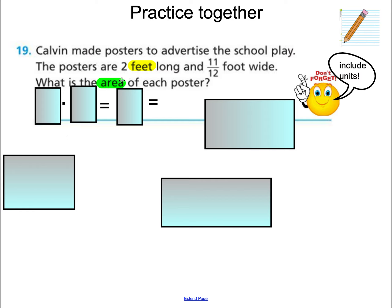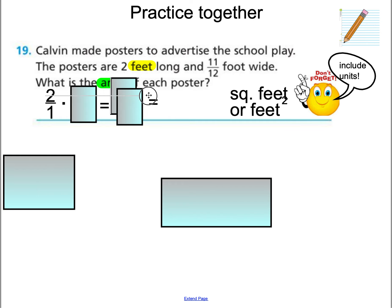Now because it's area and it's length times width, we can put our units in either square feet or feet squared. So don't forget to include units. Now what is the whole number that we are multiplying in this equation? Two feet. And remember that 2 feet can be represented in a fraction as putting the whole number over a denominator of 1. Two over one.